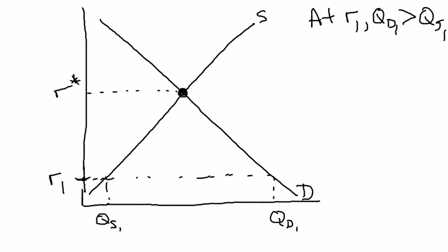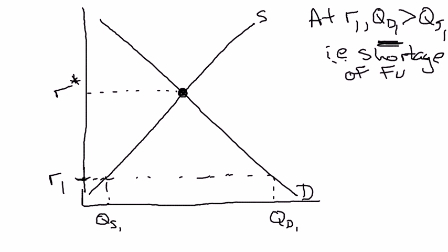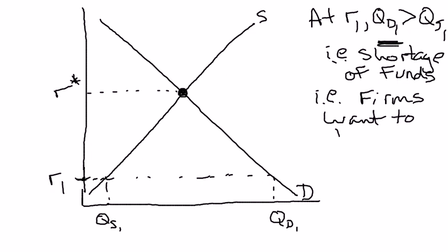At this interest rate, the amount that firms want to borrow to finance investment expenditures is actually greater than the amount that households want to save. This is not an equilibrium. I claim there's a built-in tendency in the market to return to equilibrium. Think about it from the perspective of the firms on the demand side — there are firms who want to borrow who can't. That is, there is a shortage of loanable funds.